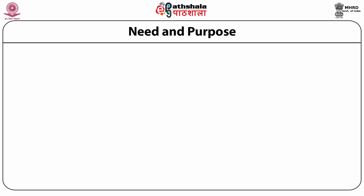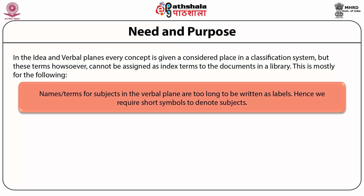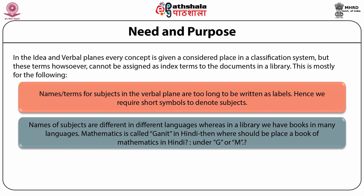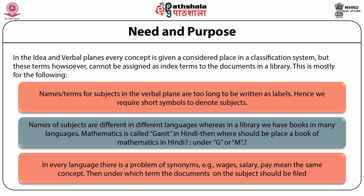Classification notation is needed and has got many roles. In the idea and verbal planes, every concept is given a well-thought-out place in the classification system. But these terms cannot be assigned as index terms to documents in a library, mostly for the following reasons: names or terms of subjects in the verbal plane are too long to be written as labels. Hence, we require short symbols to denote subjects and arrange them. Names of subjects are different in different languages — for example, Mathematics is called Ganit in Hindi. Where should we place a book of Mathematics in Hindi, under G or M? In every language there is a problem of synonyms — for example, wages, salary, and pay mean the same concept. Under which term should the document be filed — under W for wages or S for salary?